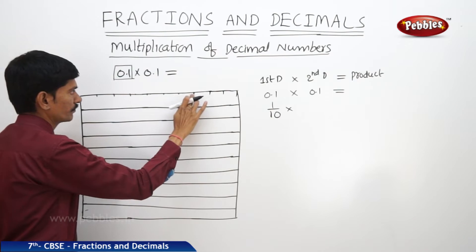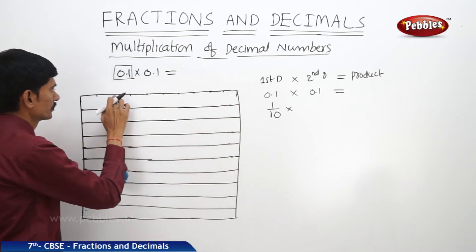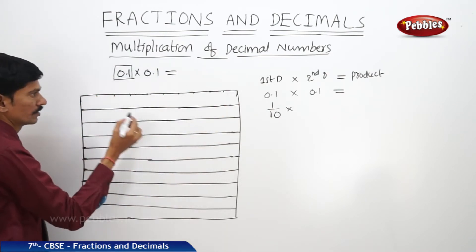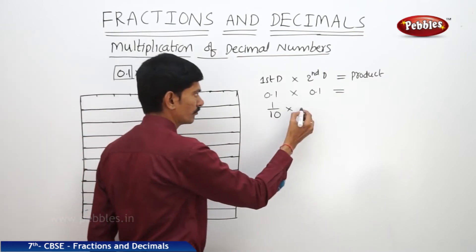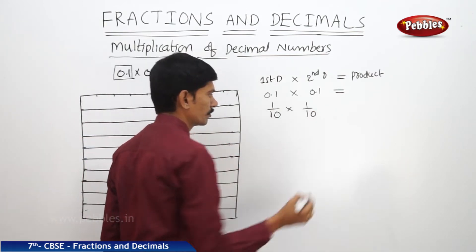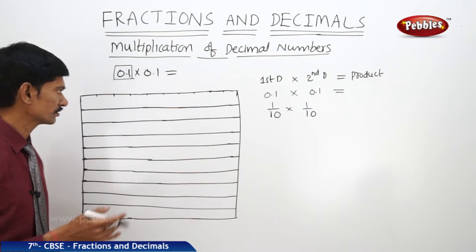In this, we will take one part — the first part. Now, again we will write 0.1 as 1 by 10. Now, we will draw the vertical rectangles.